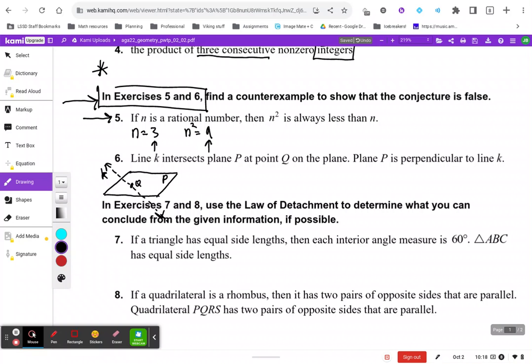Well, then we can see here that n squared is actually greater than n, which is opposite of this conjecture right here. So there's a counterexample.